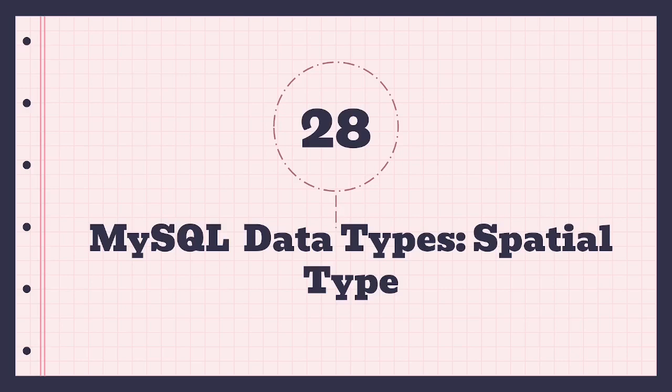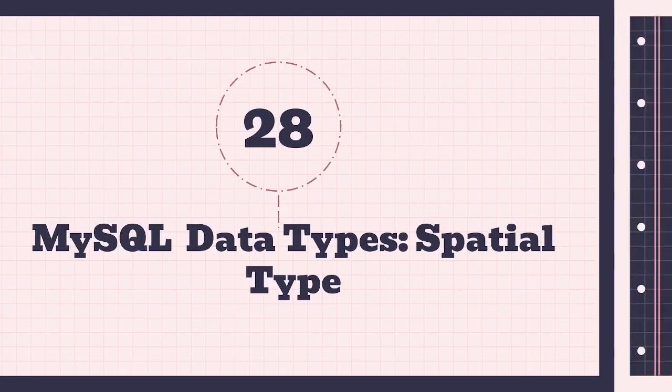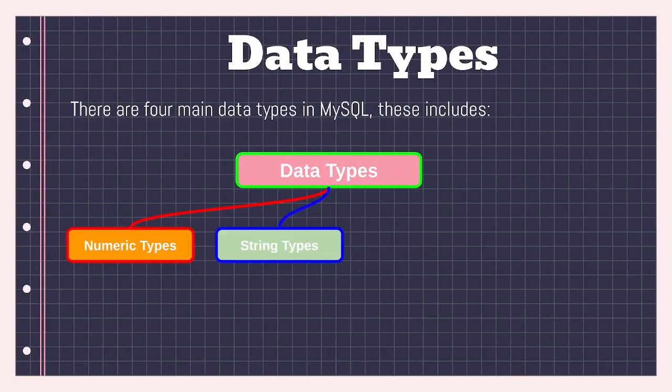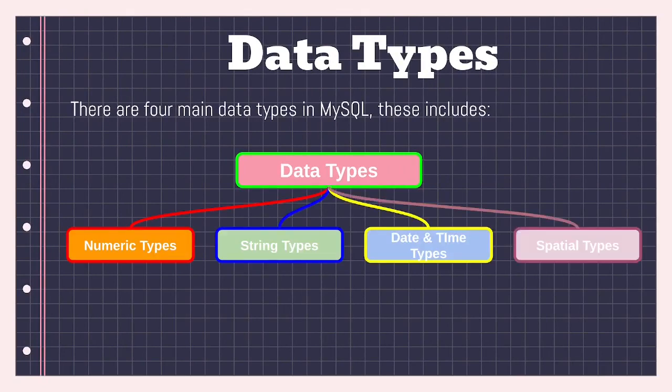I'm moving to a part of database design where we have learned about ERDs, primary keys, and foreign keys. Now I'm looking at different data types and how you can use them. In this section I'll cover numeric data types, string data types, time and date types, and also special data types.